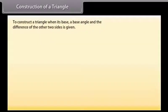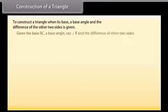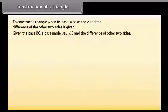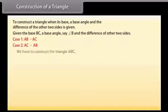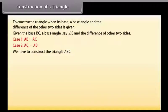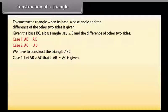Now we will construct a triangle when its base, a base angle, and the difference of the other two sides is given. We have two cases: the difference can either be AB minus AC, or AC minus AB. Let's first construct the triangle using case one, when AB is greater than AC, that is AB minus AC is given.